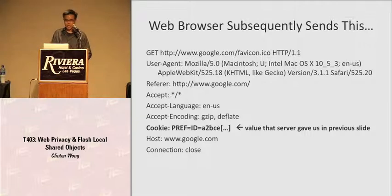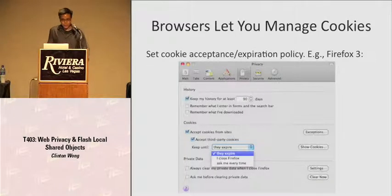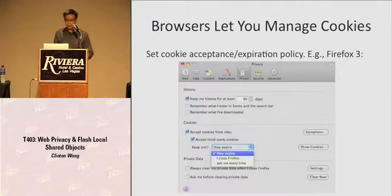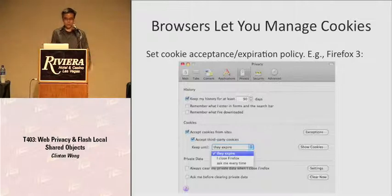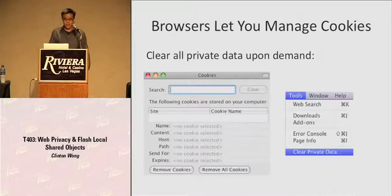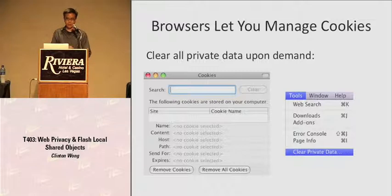Browsers let you manage cookies. In Firefox 3, you can tell it to accept or deny cookies in general, whether to allow or deny third-party cookies — those are cookies from websites you didn't explicitly visit, like ad websites referenced from a page you're on. You can also set the expiration policy; the web server tells you the expiration date, but you can override it and clear all cookies when you quit Firefox. There's also an option to clear all private data in general, including browsing history, saved usernames and passwords, and cookies.